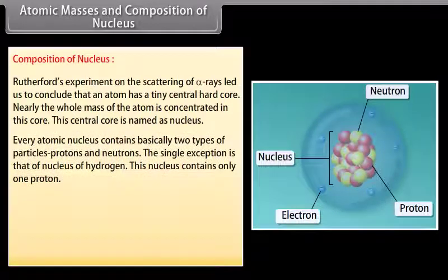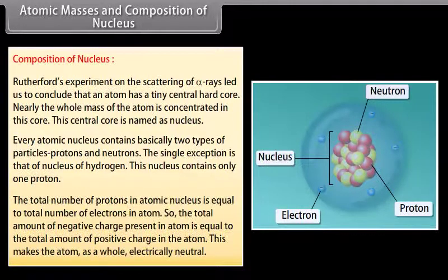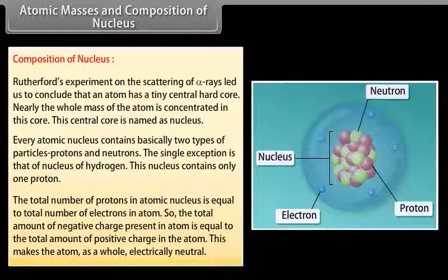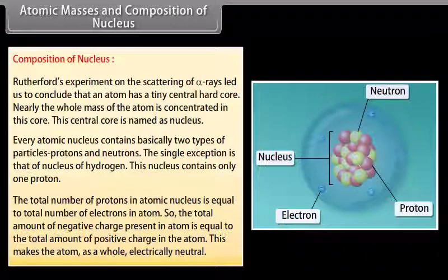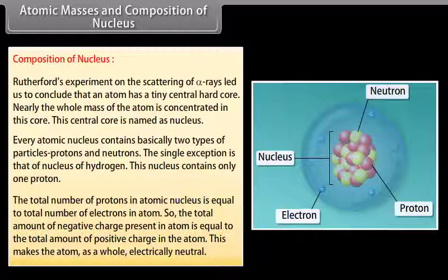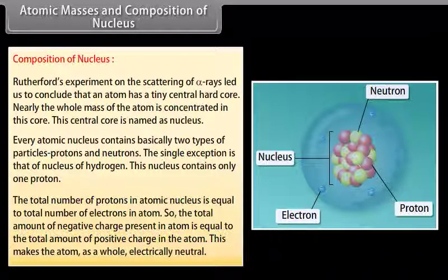Every atomic nucleus contains basically two types of particles: protons and neutrons. The single exception is that of nucleus of hydrogen. This nucleus contains only one proton. The total number of protons in atomic nucleus is equal to total number of electrons in atom. So, the total amount of negative charge present in atom is equal to the total amount of positive charge in the atom. This makes the atom as a whole electrically neutral.